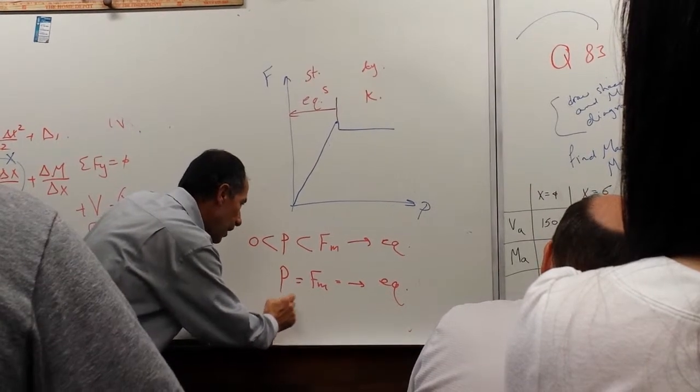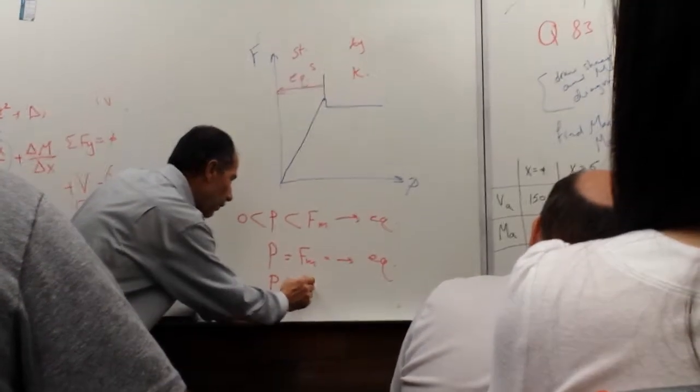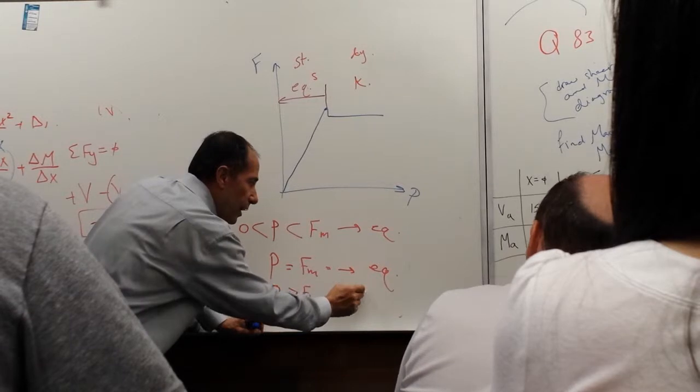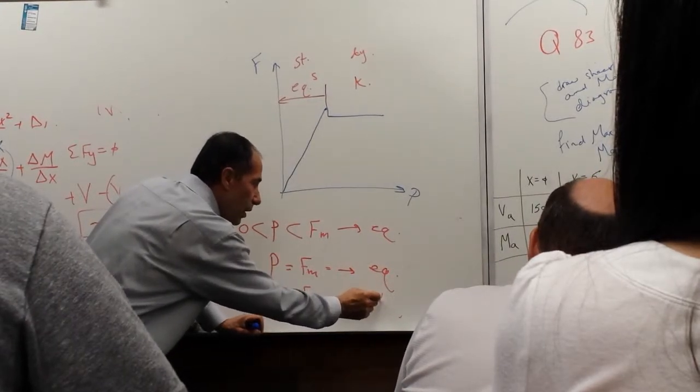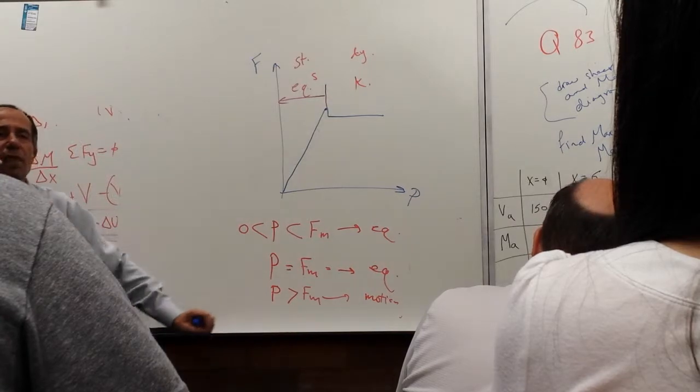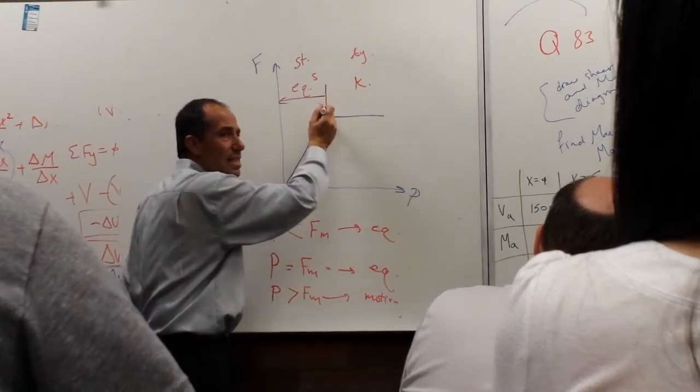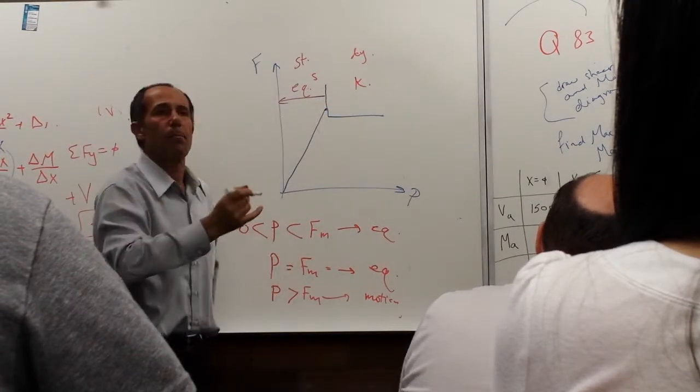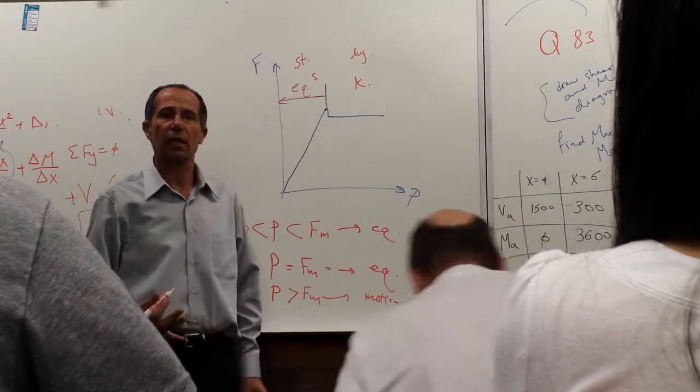And if P greater than F max, you are in kinetic motion or in motion. And this is when it is, at this moment when it passes it, we drop because we move to the kinetic.